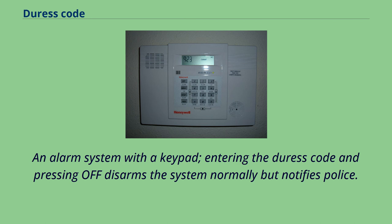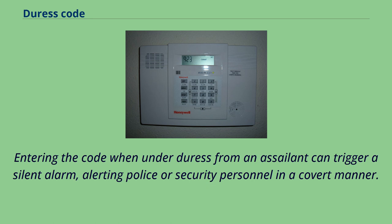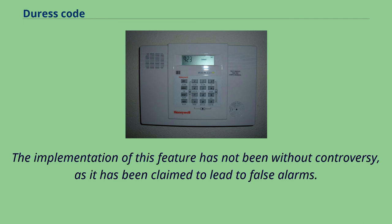An alarm system with a keypad: entering the duress code and pressing off disarms the system normally but notifies police. Some home and property alarm systems have duress PINs where the last two digits of the reset code are switched around. Entering the code when under duress from an assailant can trigger a silent alarm, alerting police or security personnel in a covert manner. The implementation of this feature has not been without controversy, as it has been claimed to lead to false alarms.